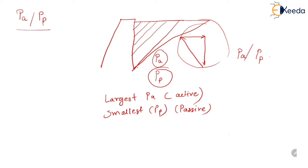This procedure is repeated several times for different trial failure surfaces. The trial surface which gives the largest value of PA in the active condition and the smallest value of PP in the passive condition is the actual failure surface. Now let us discuss Coulomb's wedge theory for active pressure for cohesionless soils.